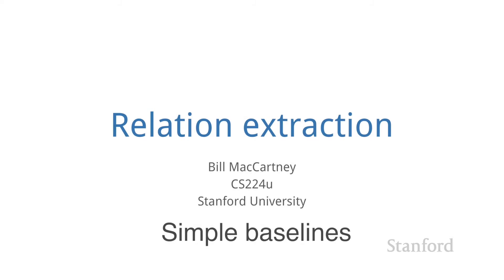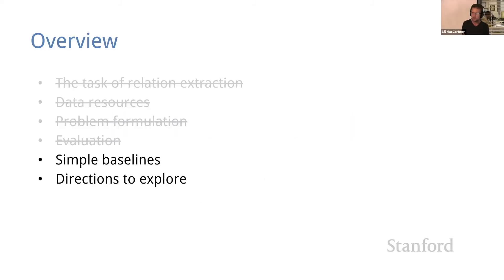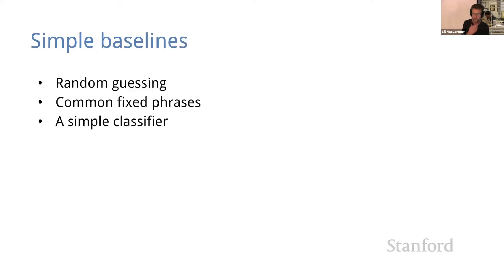It's good methodological practice whenever you're starting to build new models to start by evaluating very simple models which establish baselines to which you can then compare the more sophisticated models that you're going to build later on. So to do that we're going to start by looking at three simple models: a random guesser, a very simple phrase matching strategy, and then our first machine learning based approach which will be a simple bag of words classifier.